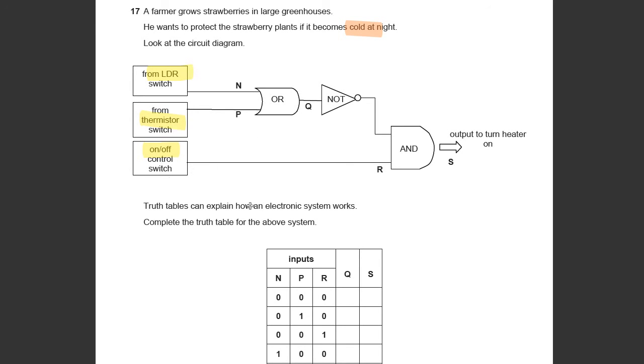Now, truth tables can explain how an electronic system works. Complete the truth table for the above system. I think it's really useful when you're looking at logic gates to just try and remember what they mean from the OR, NOT, or AND. So I'm going to tell you the three kind of rules.